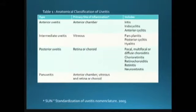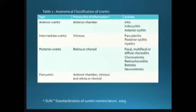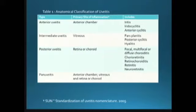When we say anterior uveitis, it is meant to be iritis, iridocyclitis, and anterior cyclitis. The intermediate, on the other hand, will be focused on the intermediate part of the eye — we are talking about the pars plana. So we have pars planitis, posterior cyclitis, and hyalitis, which is only inflammation in the vitreous. The posterior uveitis is retina or choroid and will be multifocal or focal — retinochoroiditis, retinitis, and also neuroretinitis. If all layers are involved, you will label this pan-uveitis.